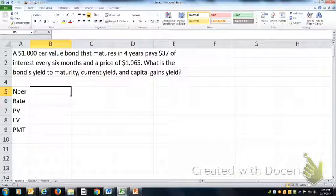Alright, a $1,000 par value bond that matures in four years pays $37 of interest every six months and has a price of $1,065. What is the bond's yield to maturity, current yield, and capital gains yield?